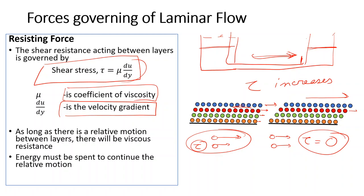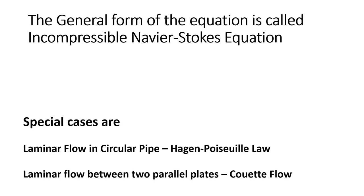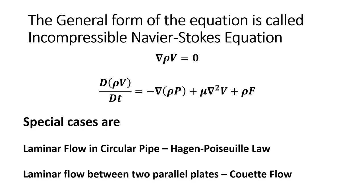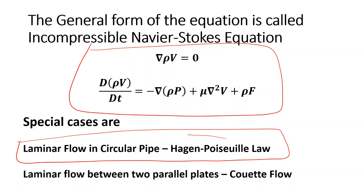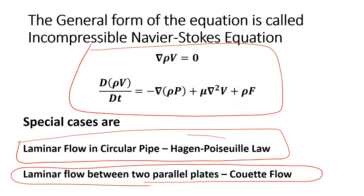The general form of the governing equation is called the incompressible Navier-Stokes equation. We are not going to study that in full. We will only discuss a special case: laminar flow in a circular pipe, which is Hagen-Poiseuille's law. There is another case — laminar flow between two parallel plates — which is left for self-study. We will focus on laminar flow in pipes.